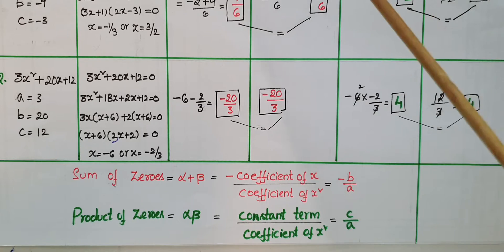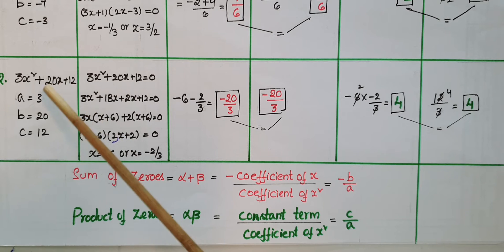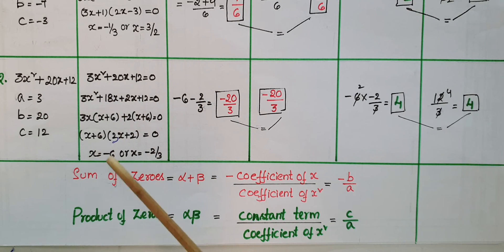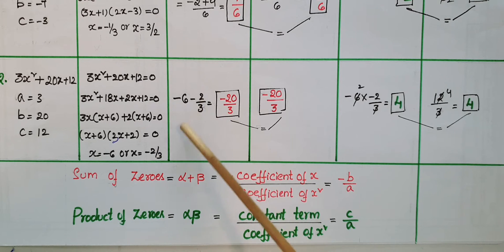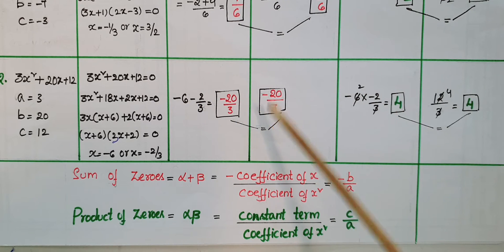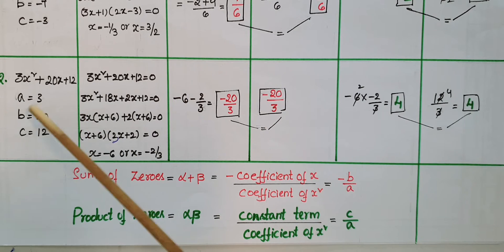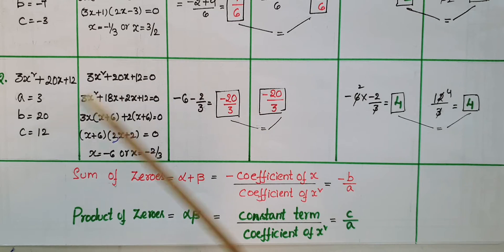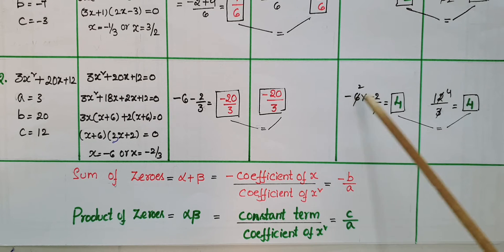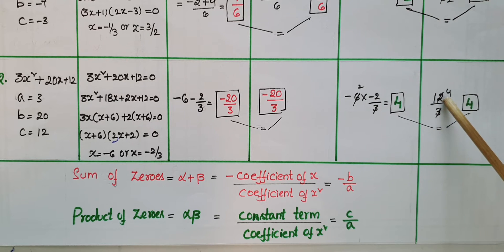Another example: 3x² + 20x + 12, where a = 3, b = 20, c = 12. Factorizing this polynomial gives zeros -6 or -2/3. Sum of zeros: alpha + beta = -6 + (-2/3) = -20/3. This equals -b/a = -20/3. Product of zeros: (-6) × (-2/3) = 4, and c/a = 12/3 = 4.